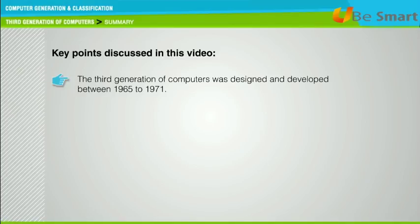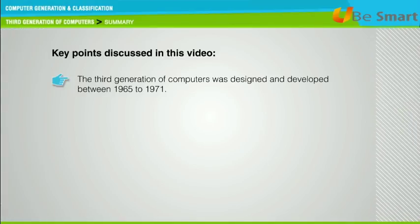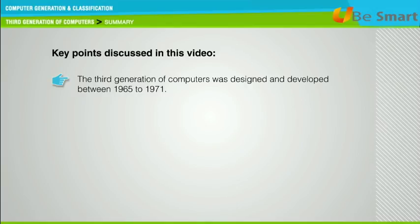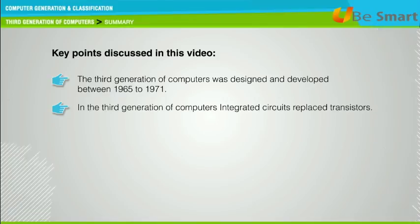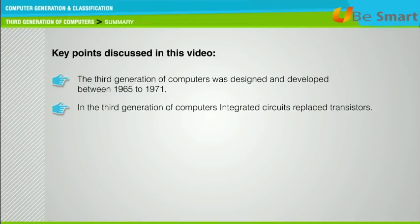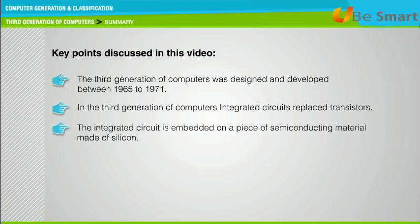The third generation of computers was designed and developed between 1965 and 1971. In the third generation of computers, integrated circuits replaced transistors. The integrated circuit is embedded on a piece of semiconducting material made of silicon.